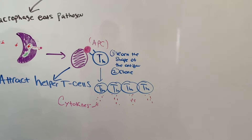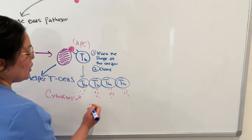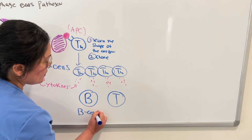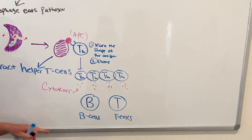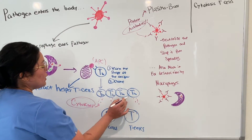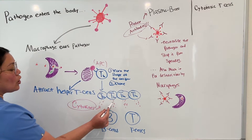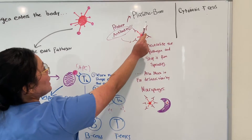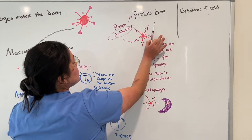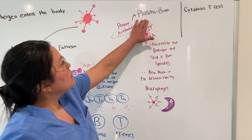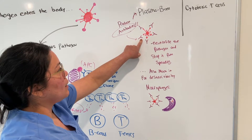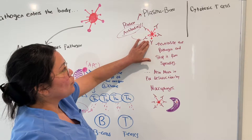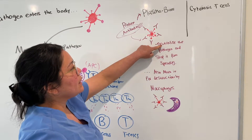The two cells that are stimulated by the helper T cells are B cells and T cells — specifically the plasma B cells and the cytotoxic T cells. Plasma B cells produce antibodies. These antibodies are going to surround the pathogen, and this basically blocks the pathogen from spreading or from interacting with other cells — in other words, it neutralizes the pathogen. It also marks it for destruction by the macrophages.